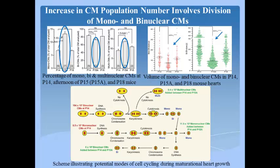Authors determined that this burst of cells is primarily by splitting of mononuclear and binuclear cells as demonstrated in this schematic. Binuclear cells without undergoing cytokinesis become multinuclear cells, and with cytokinesis give rise to mononuclear and binuclear cells but with reduced cell volume. Similarly, mononuclear cells split and become smaller mononuclear cells and also some small binuclear cells.